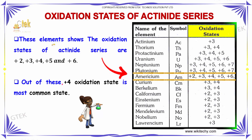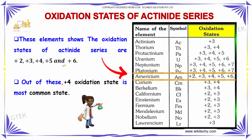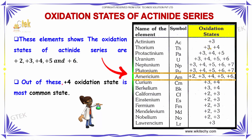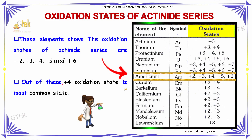Oxidation State: These elements show the oxidation states of the actinide series, which are almost plus 2, plus 3, plus 4, plus 5, and plus 6. You are able to see the oxidation states of different elements in the actinide series. Out of these, the plus 4 oxidation state is the most common state.